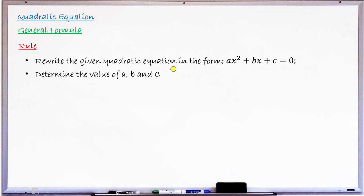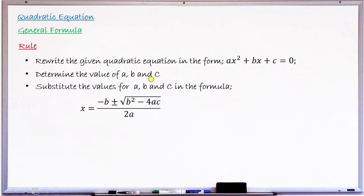When that is done, you now substitute those values for A, B, and C into the general formula: X equals minus B plus or minus the square root of B squared minus 4AC, all over 2A. You substitute the values determined in step two — that is your A, B, and C — into this formula. After substituting, finally you simplify, and whatever you have will be the roots or the solution of that quadratic equation.